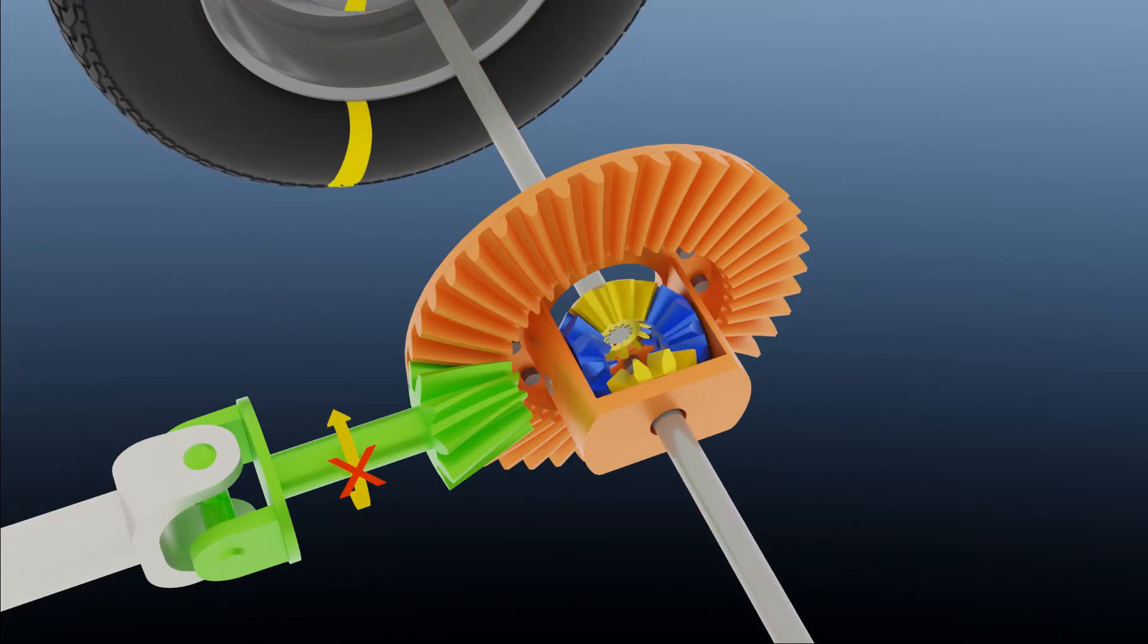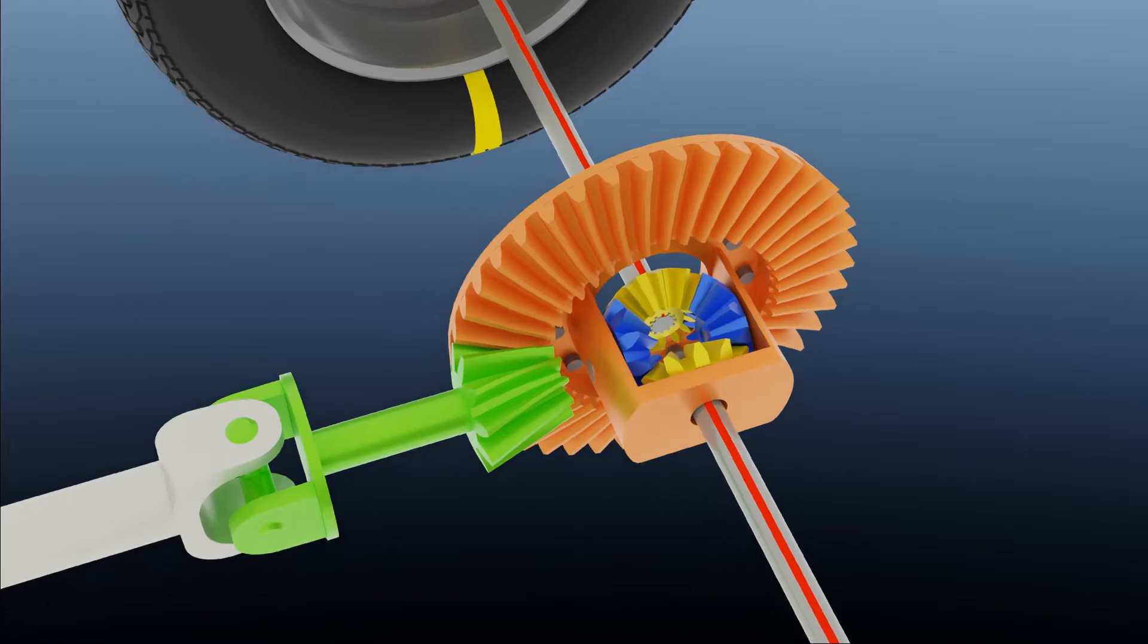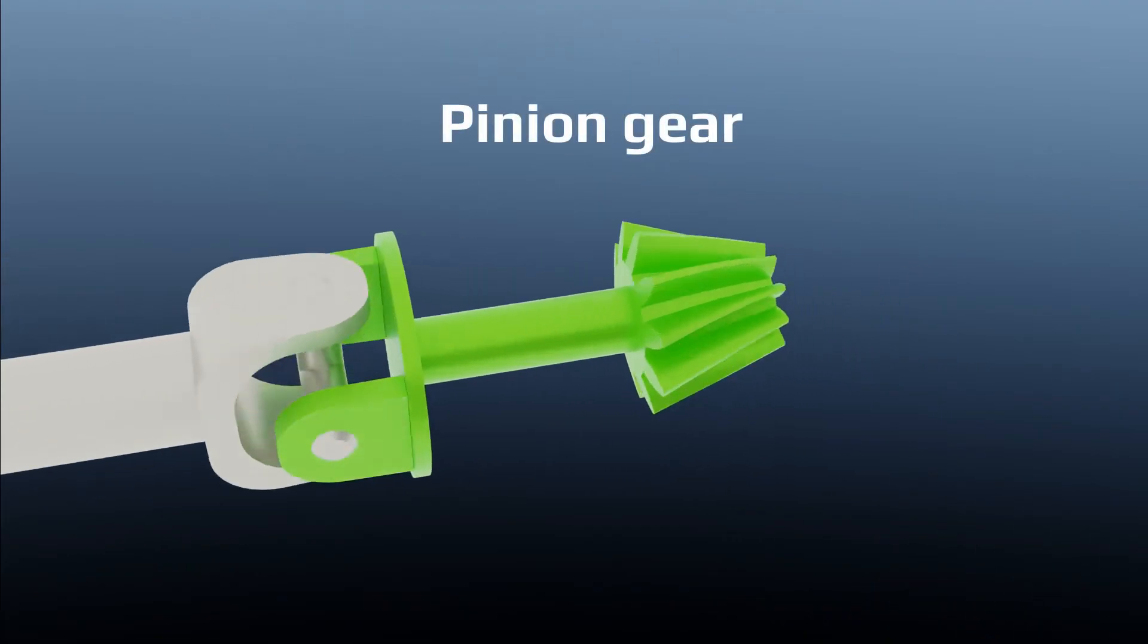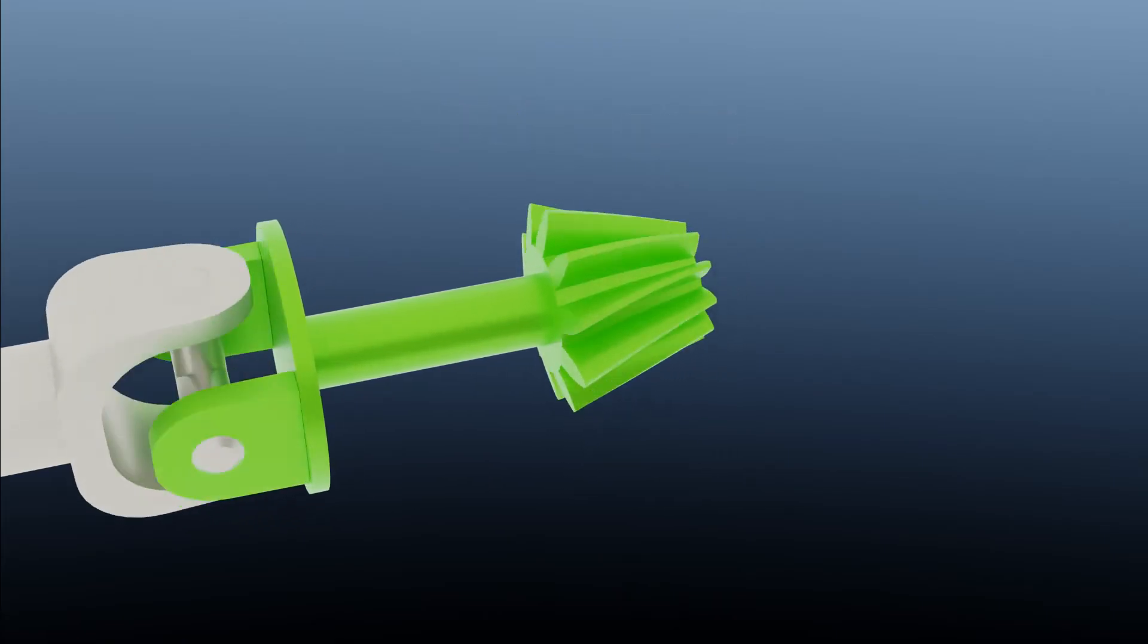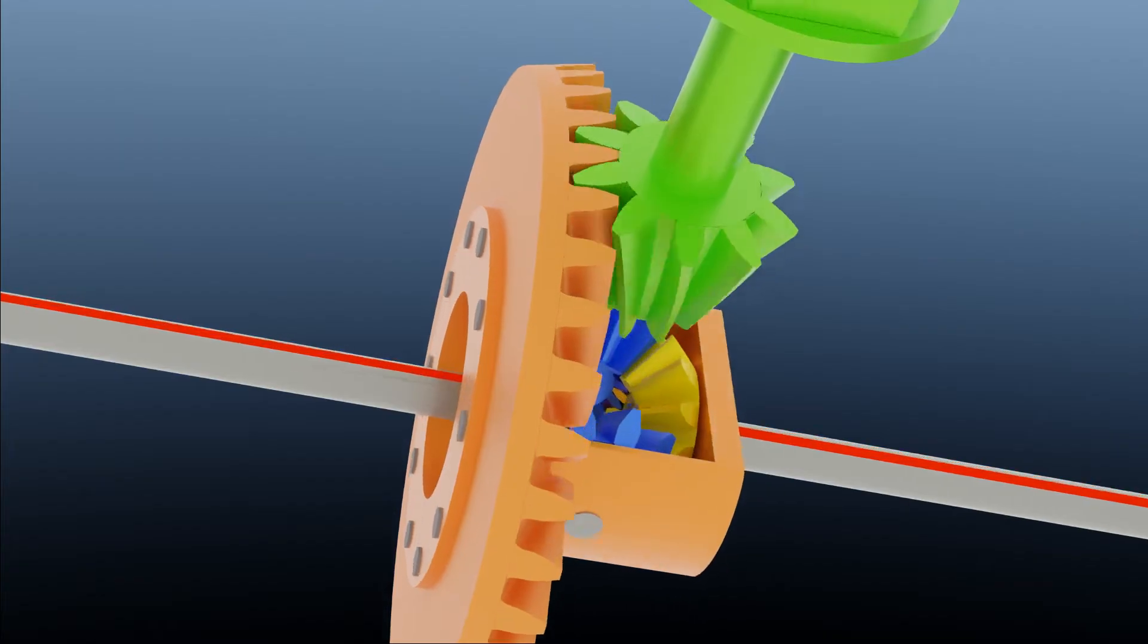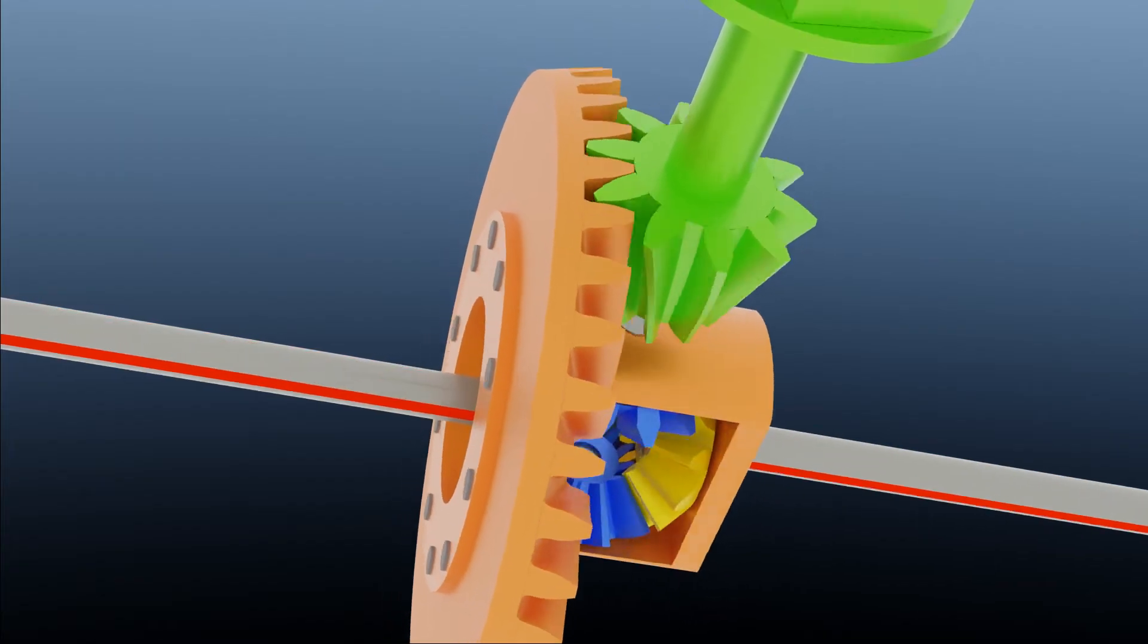Pinion gear drives the ring gear or crown gear. Final gear reduction happens here.